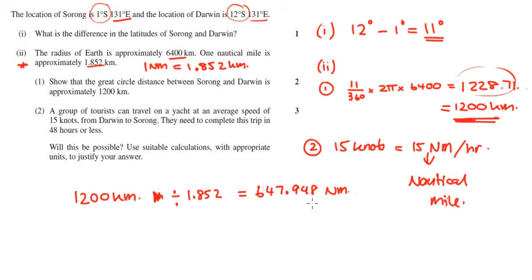We're traveling 15 nautical miles per hour. If I want to find out how many hours it's going to take me, I'm simply going to divide this by 15. Divide that by 15, I come up with approximately 43.1965 hours. Looking back to the question, it says they need to complete this trip in 48 hours or less. Will this be possible? If it's going to take me 43 hours, I would say, therefore, yes, as it's below the 48 hours, because it's 43.1965 hours.